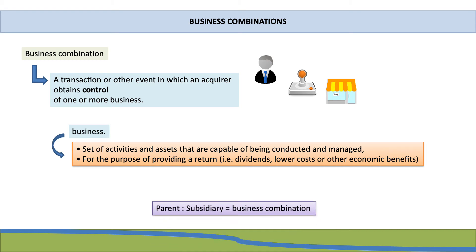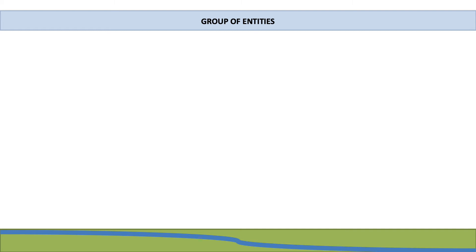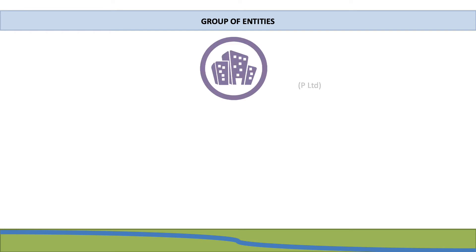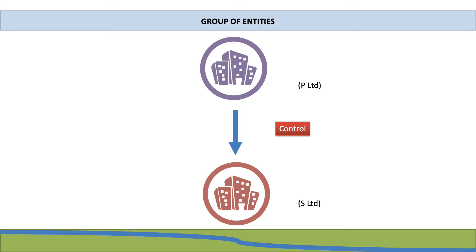When you have a business combination you will have a parent-subsidiary relationship. For example, P Limited has purchased the majority of shares in S Limited and as a result has gained control over S Limited. Both are legal entities on their own, so S Limited is a business that P Limited has gained control over — a business combination. P Limited is referred to as the parent, investor, or acquirer, while S Limited is the subsidiary, investee, or acquiree — the company controlled by the parent.